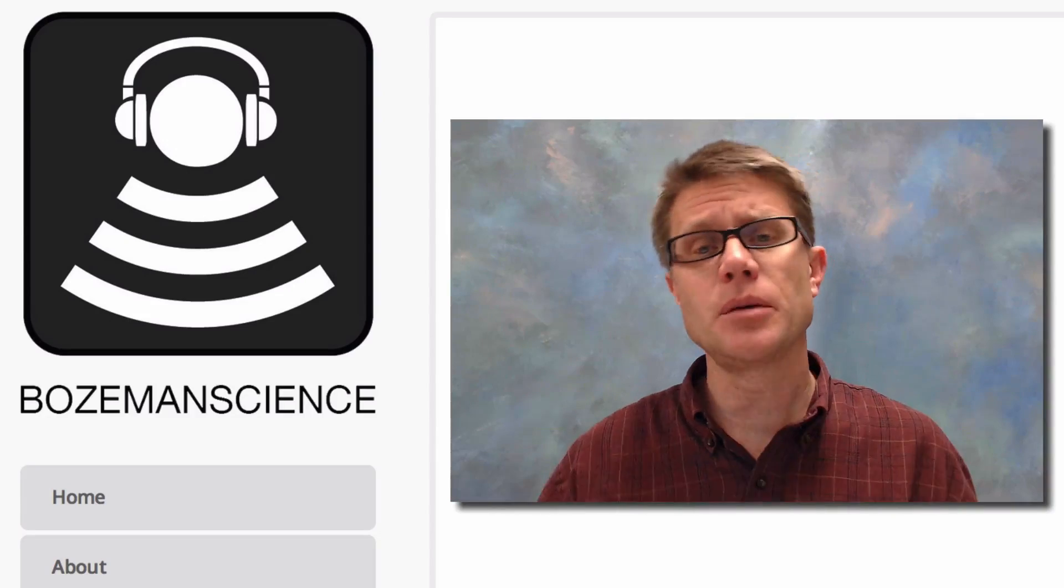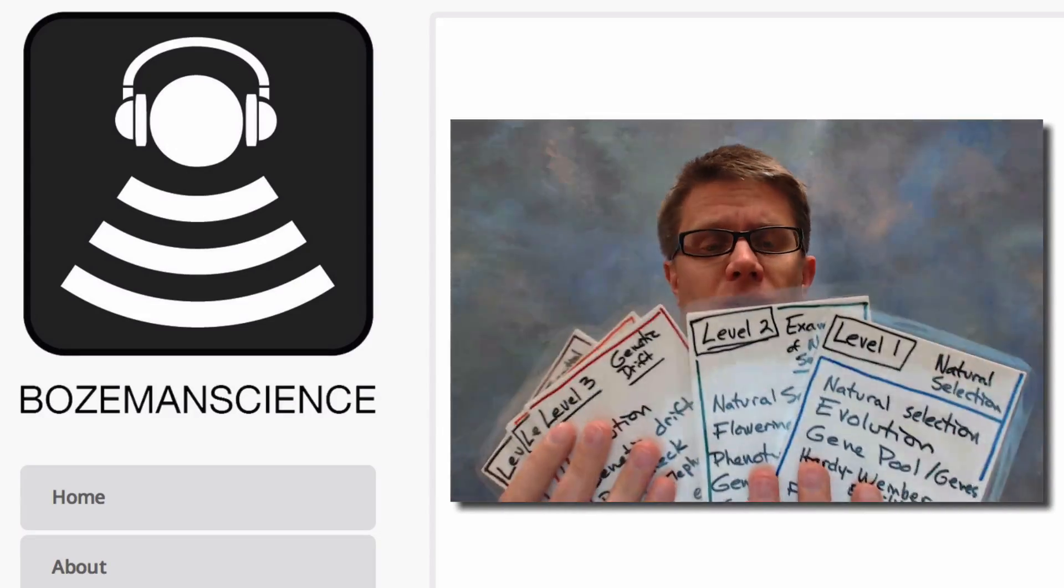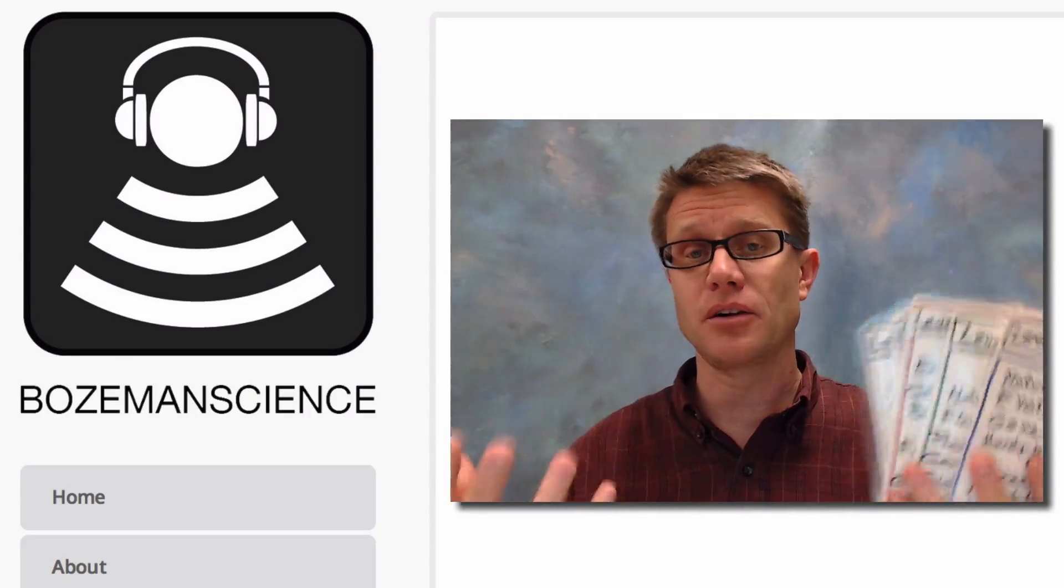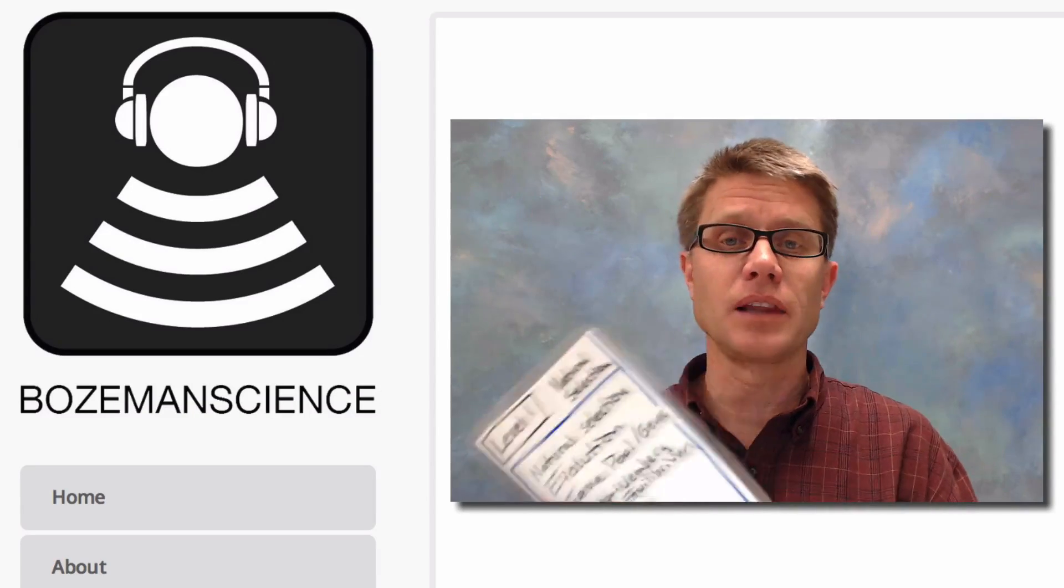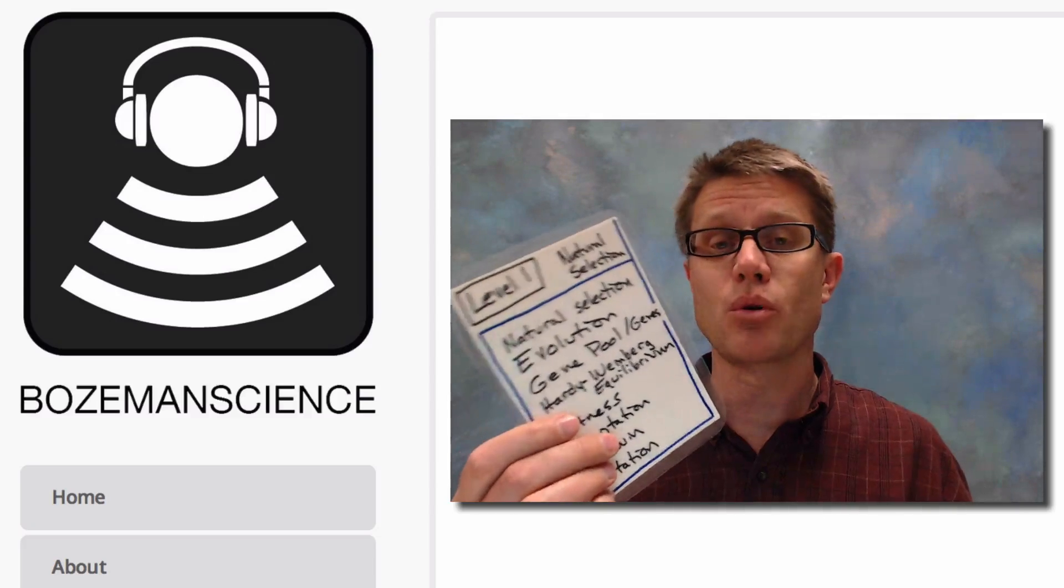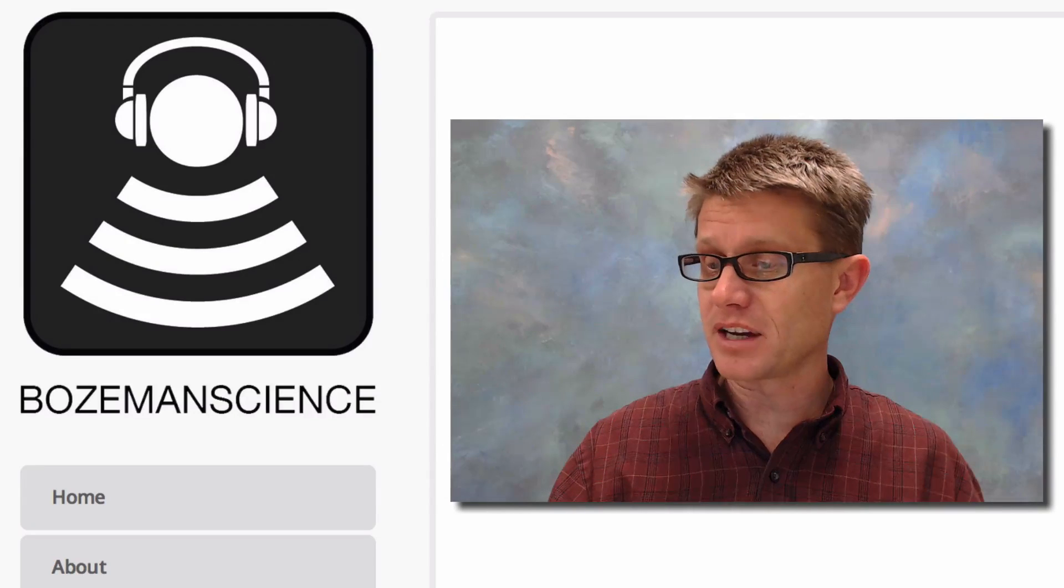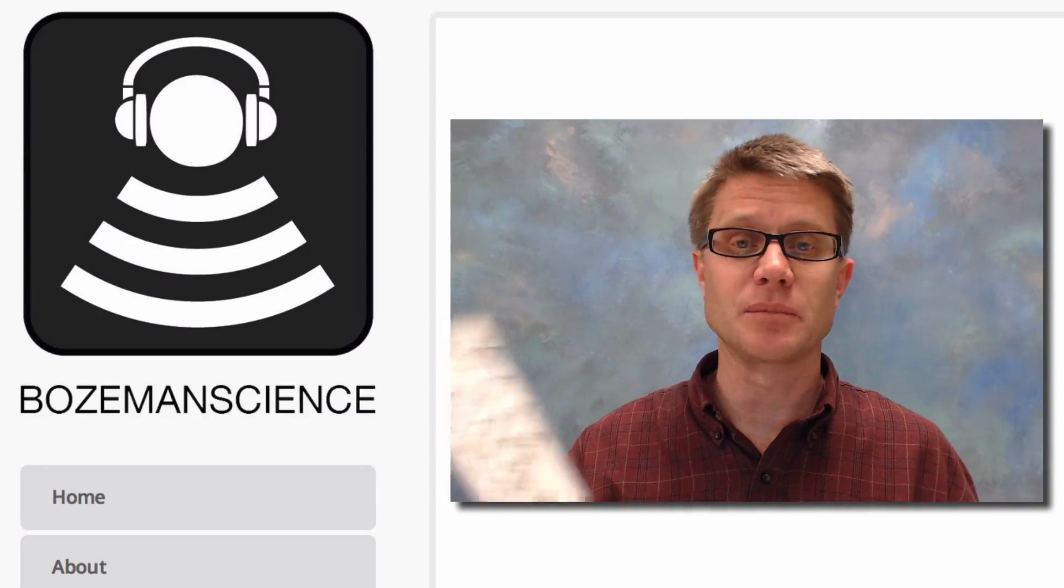The review cards are for AP Biology. They correspond to the 55 videos that I've made, which I call the 55 levels in my class. For each level, I've written down what I think are the most important terms: natural selection, gene pool, fitness, adaptation.